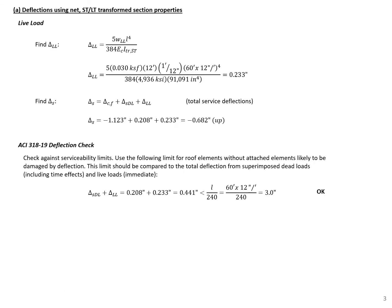The last deflection to find is our deflection from live load. Live load is an immediate load occurring when we have the ultimate concrete strength, so we use E_c based on ultimate concrete strength and our short-term transformed moment of inertia. Plugging in those values with our given span length and live load, we find a live load deflection of 0.233 inches downward. Adding this to our camber and superimposed dead load deflection gives final service deflections of negative 0.682 inches — still an upward deflection even after live load.